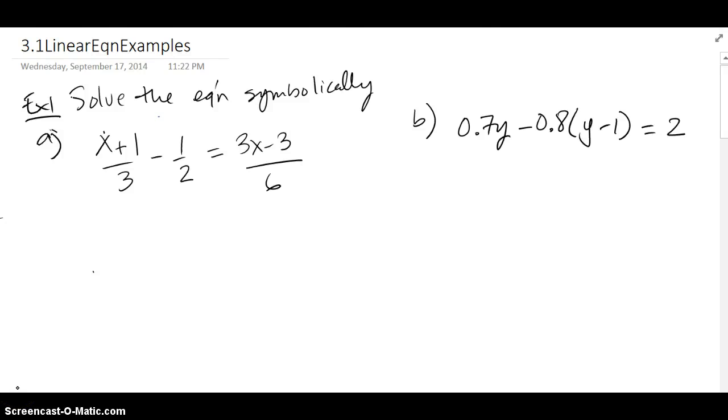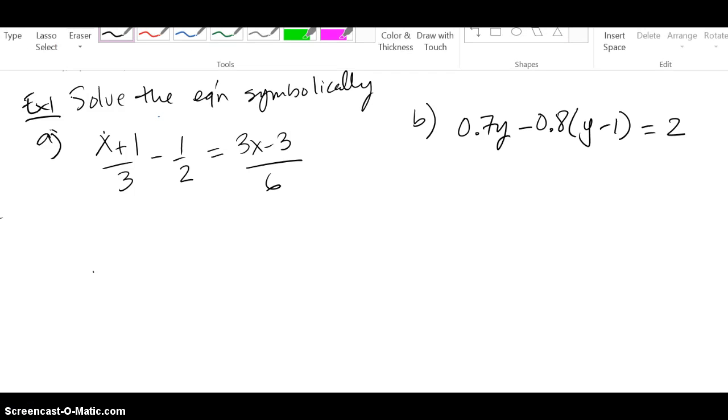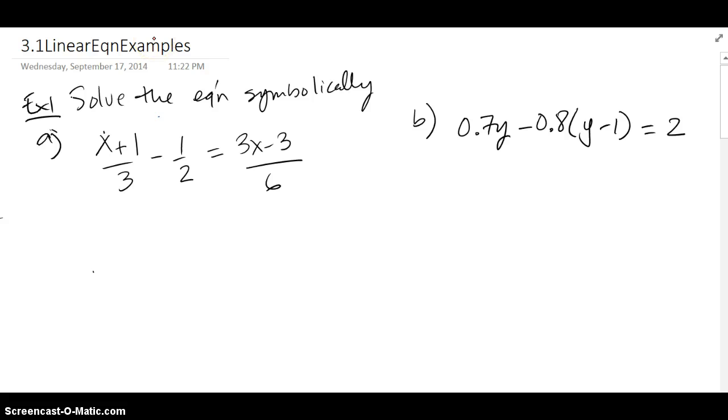Okay, I'm going to solve these equations symbolically. Since the first one has fractions, I'm going to use the lowest common denominator to reduce the fractions and get rid of them. So 6 looks like it'll work for this problem because all denominators 3, 2, and 6 are divisible by 6.